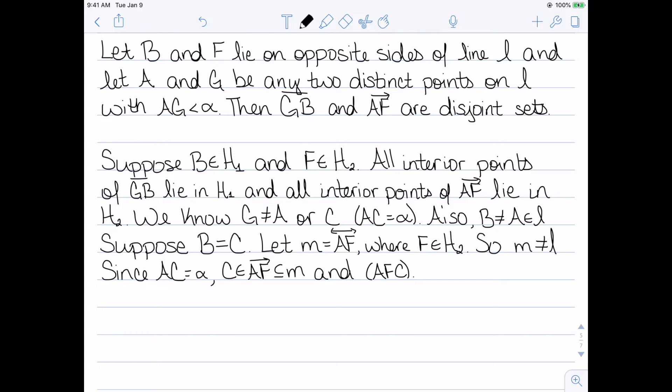However, since AC is equal to alpha, C is that polar opposite, we know that C is on the ray AF, which is a subset of that line. So that tells us that we have the betweenness relation AFC. Since I am assuming that C is equal to B, that means I also have the betweenness relation AFB.